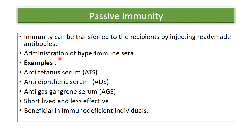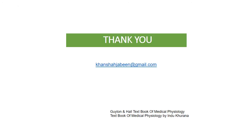The second type of artificially acquired immunity is passive immunity, where ready-made antibodies are transferred to individuals by injecting hyperimmune sera — examples include anti-tetanus serum, anti-diphtheric serum, and anti-gas gangrene serum. The individual's immune system does not play an active role here. Passively administered antibodies are readily removed by metabolism, so passive immunity is short-lived and less effective, but very beneficial for immunodeficient individuals with suppressed T-cell function. Thank you students.